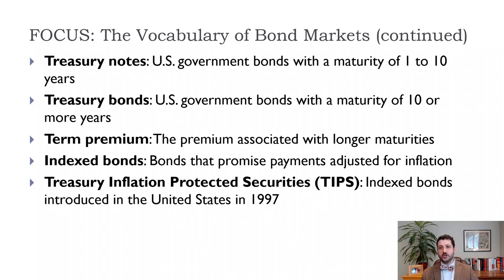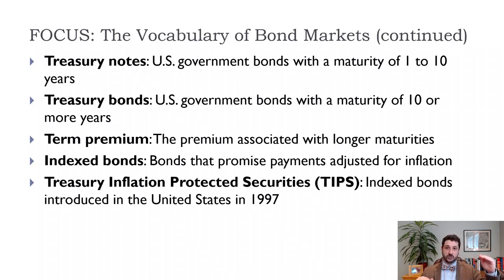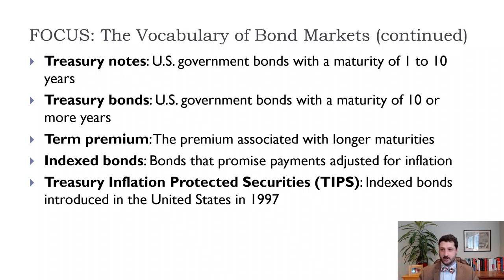Treasury Notes — technically — are bonds with a maturity of one to ten years, and Treasury Bonds are bonds with a maturity of 10 or more years. The term premium is the premium associated with longer maturities. While the risk premium is about default, the term premium reflects the difference between, say, a 10-year Treasury Bond and a 1-year Treasury Bill, or even a 30-year Treasury Bond and a 5-year Treasury Note.